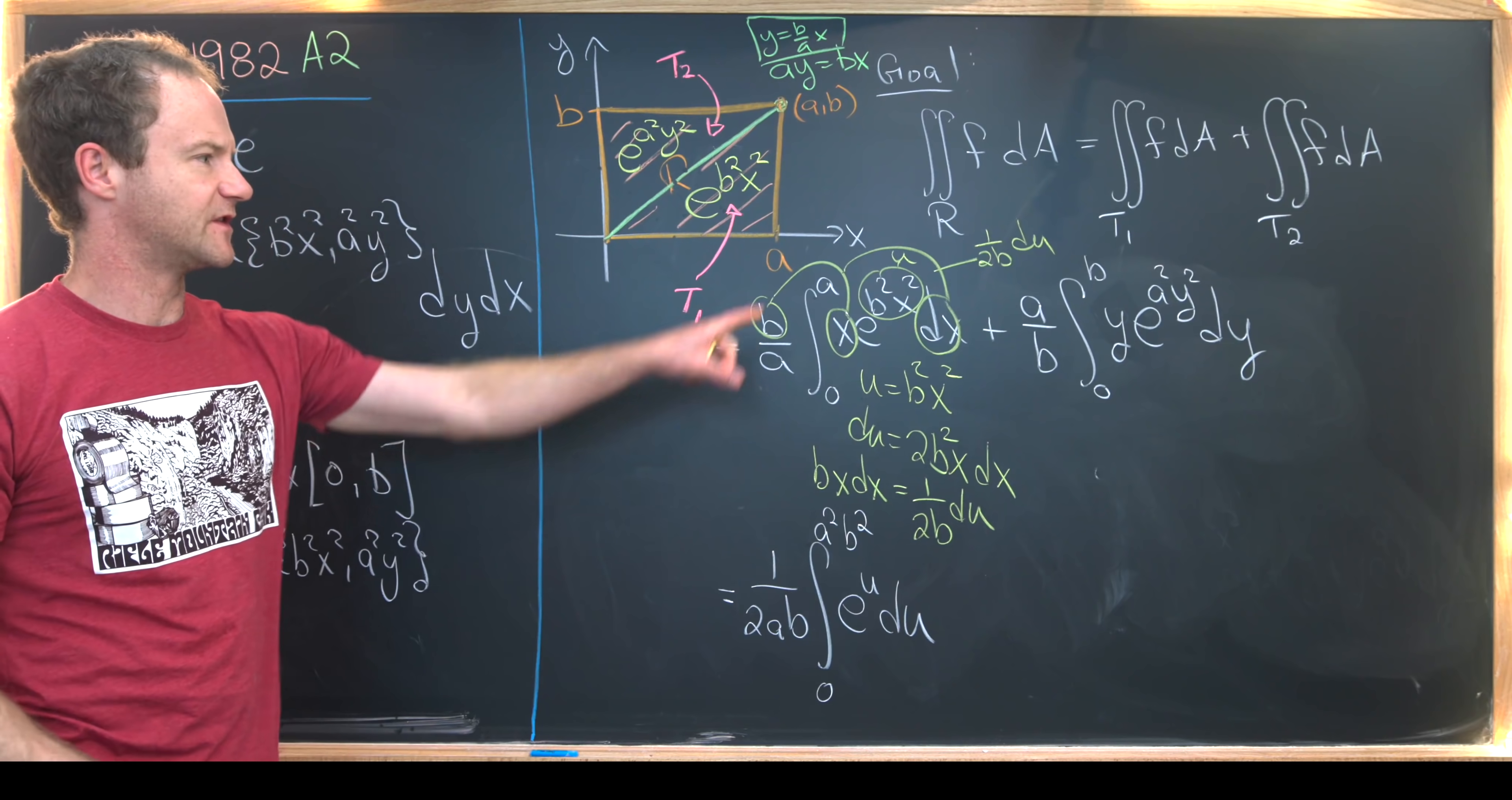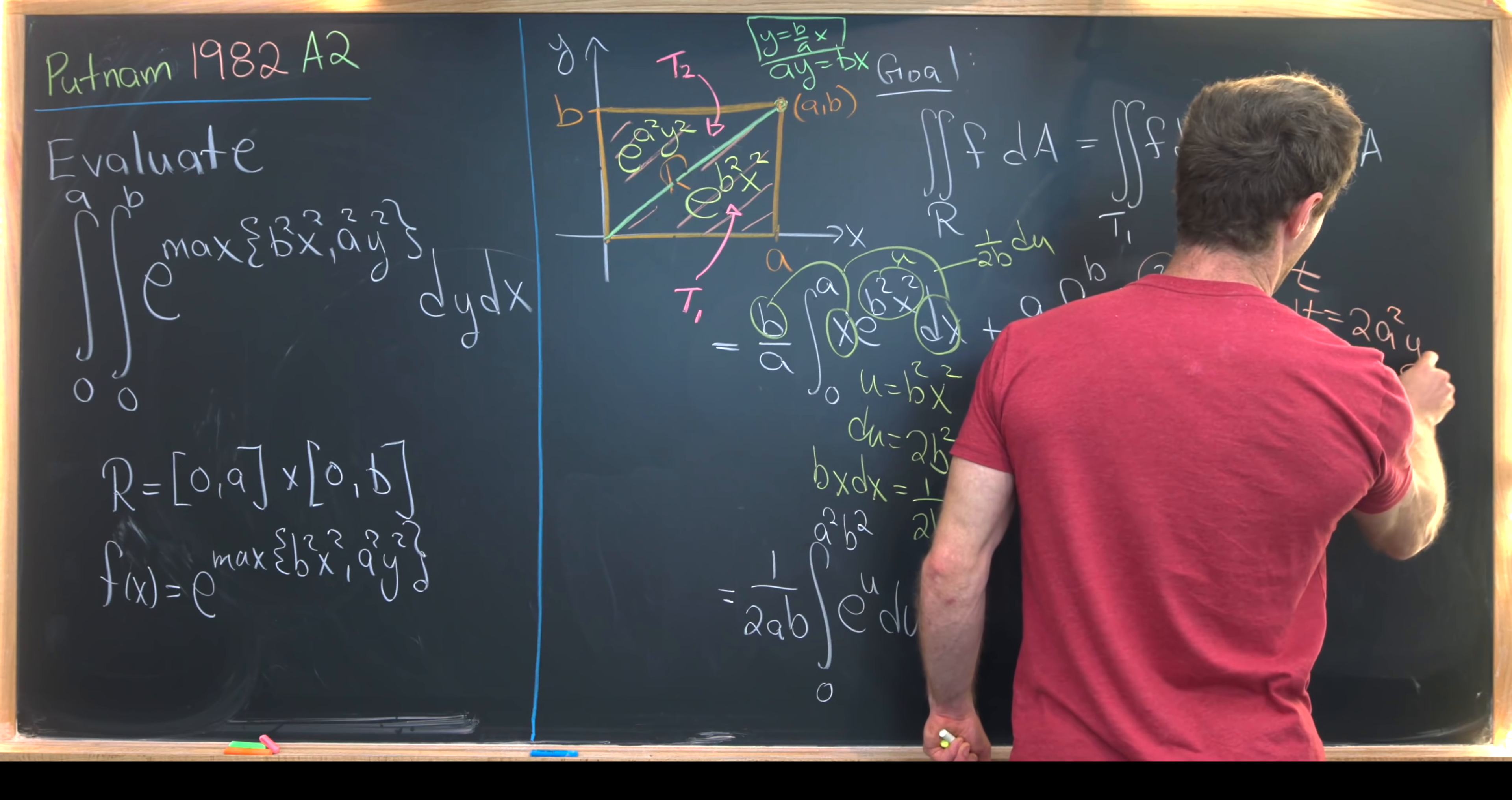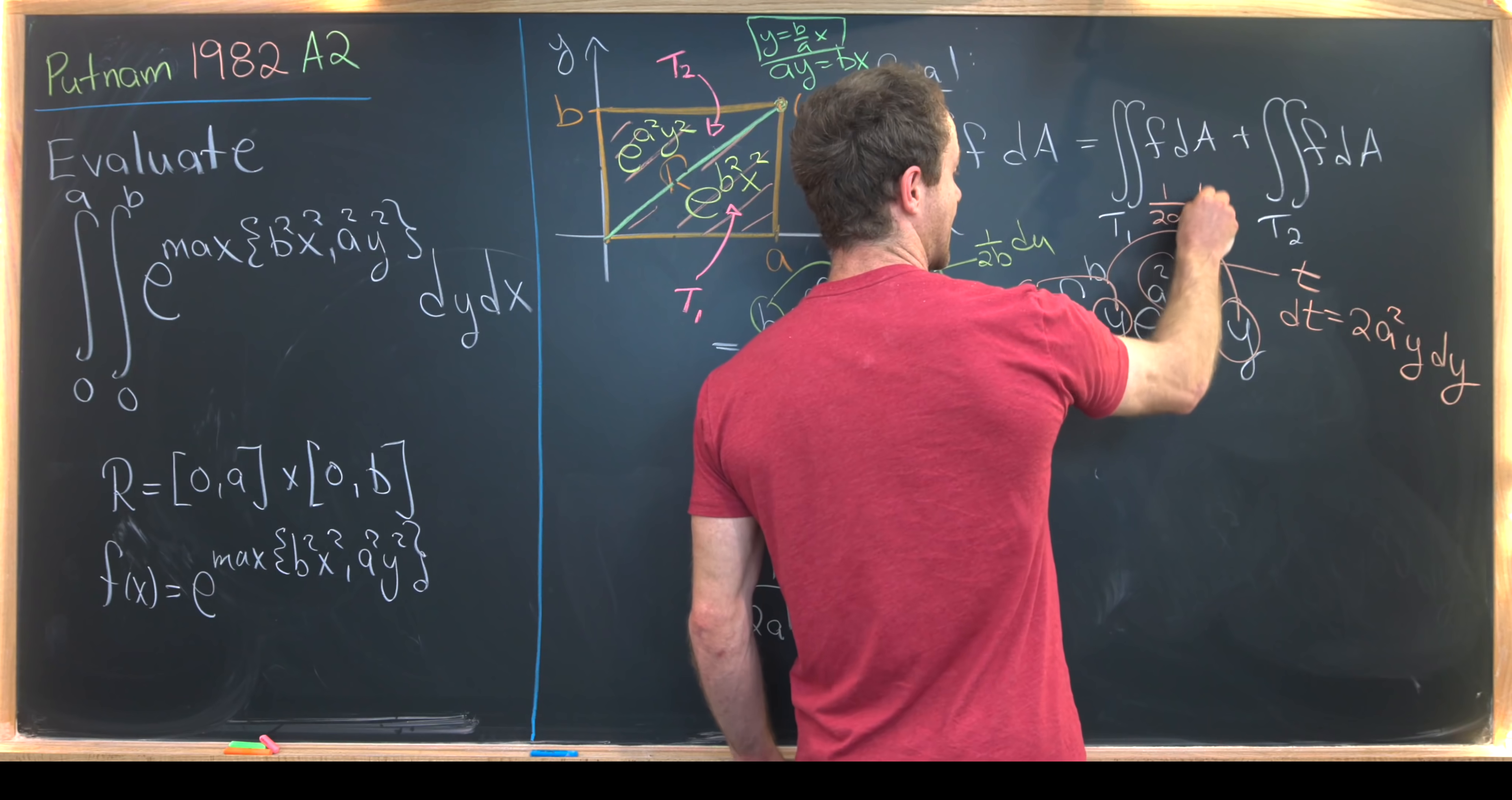Now let's see what we've got for this other bit. It's going to be essentially the same thing, though. So let's say we let this equal t. Well, that means that dt is equal to two a squared y dy, like that. But that means that this a times y times dy can be replaced with one over two a dt.